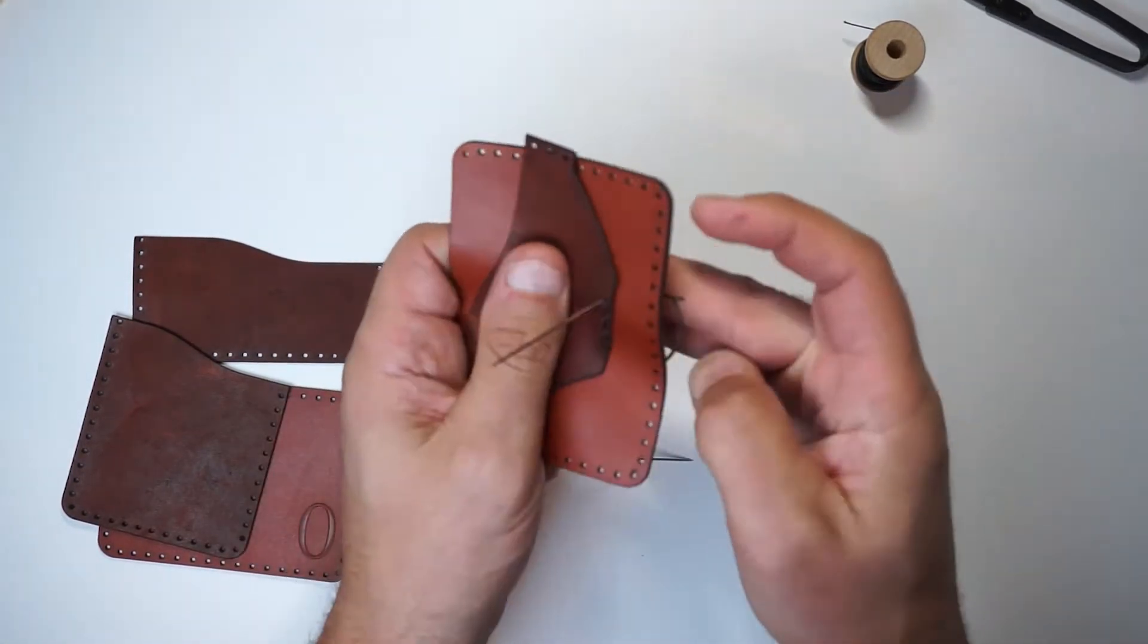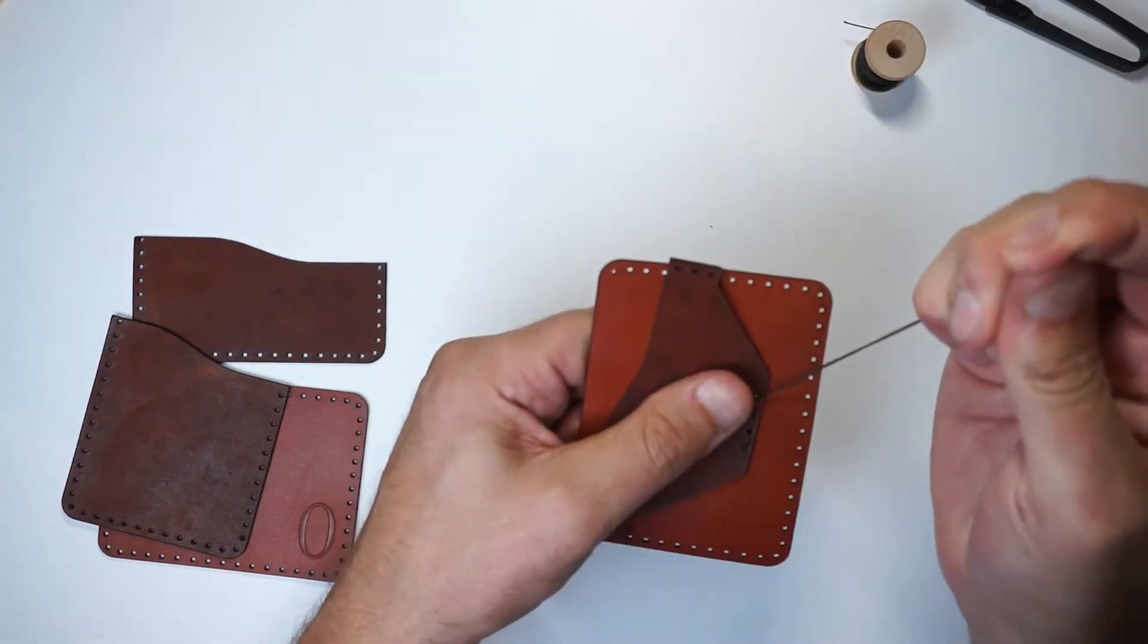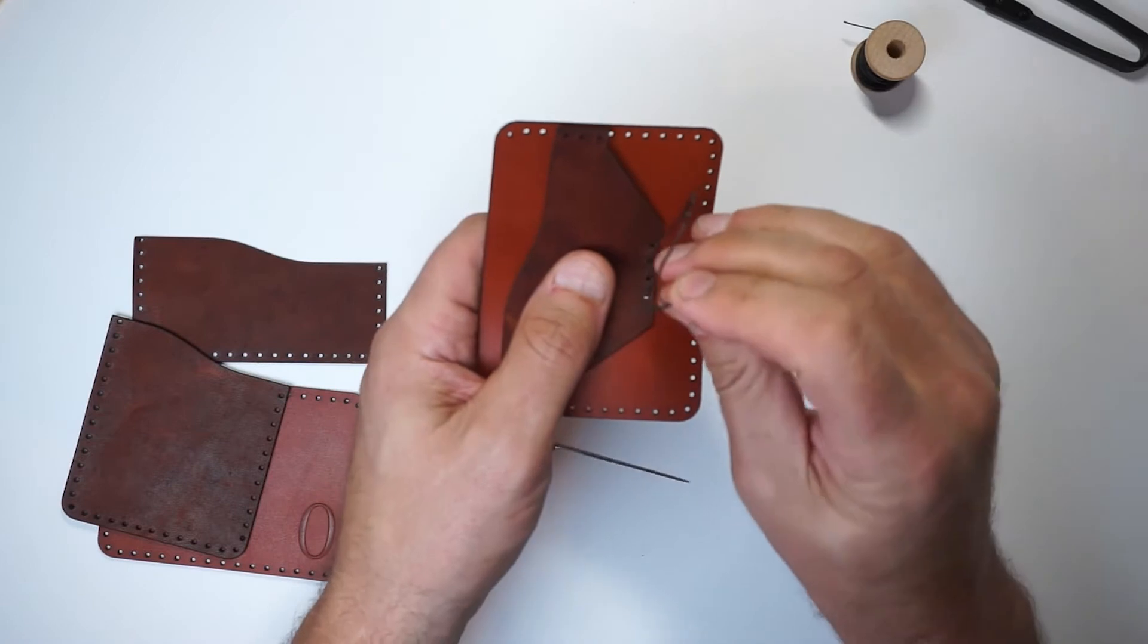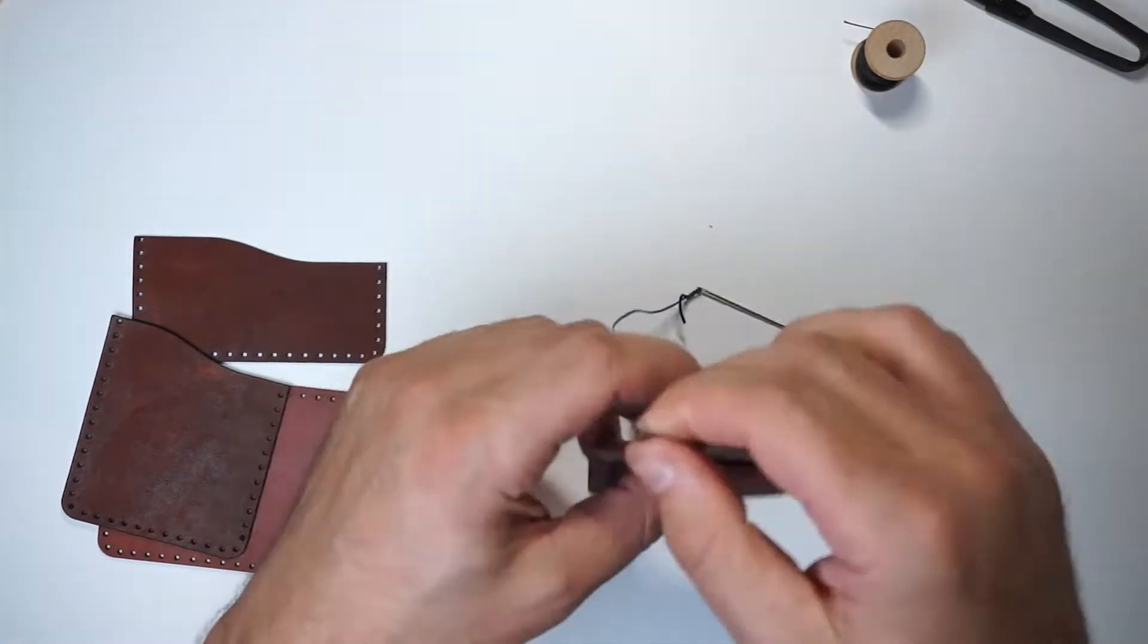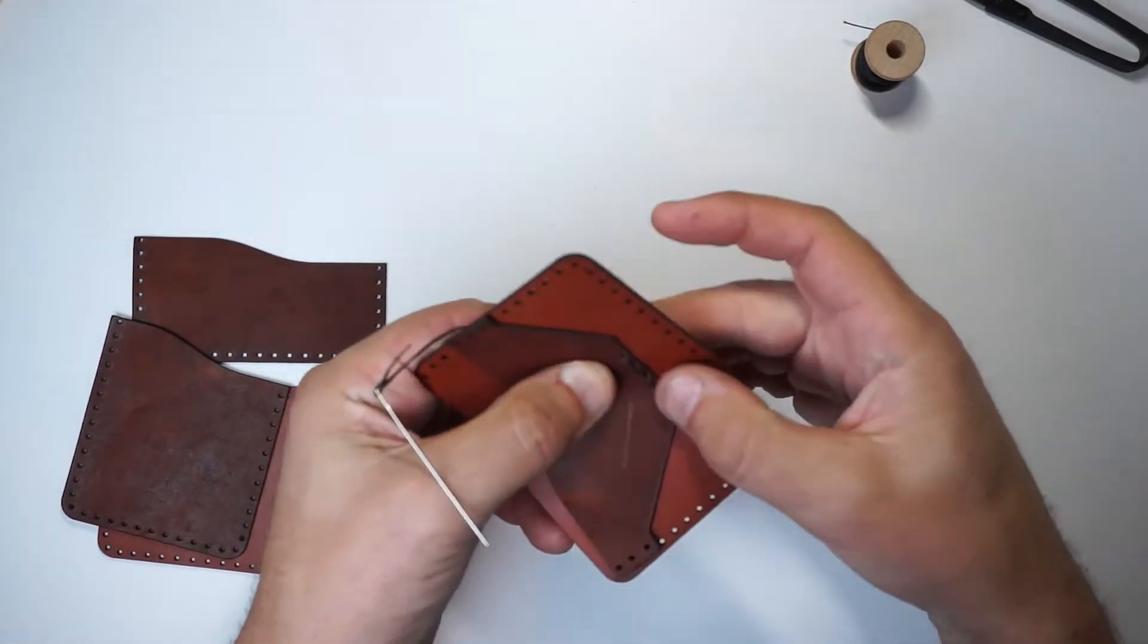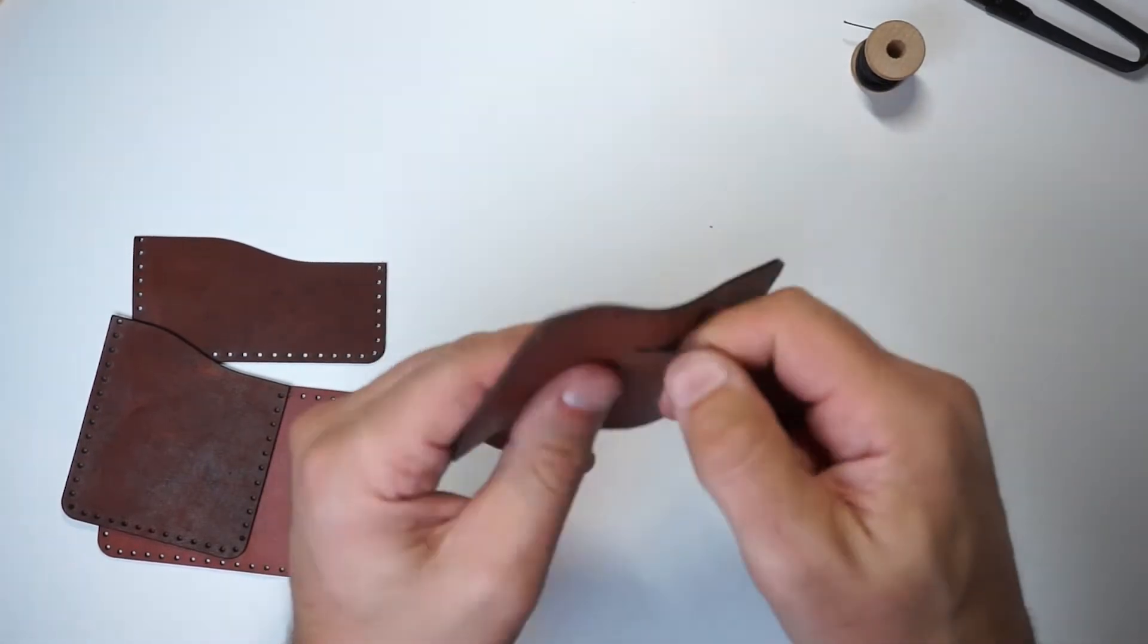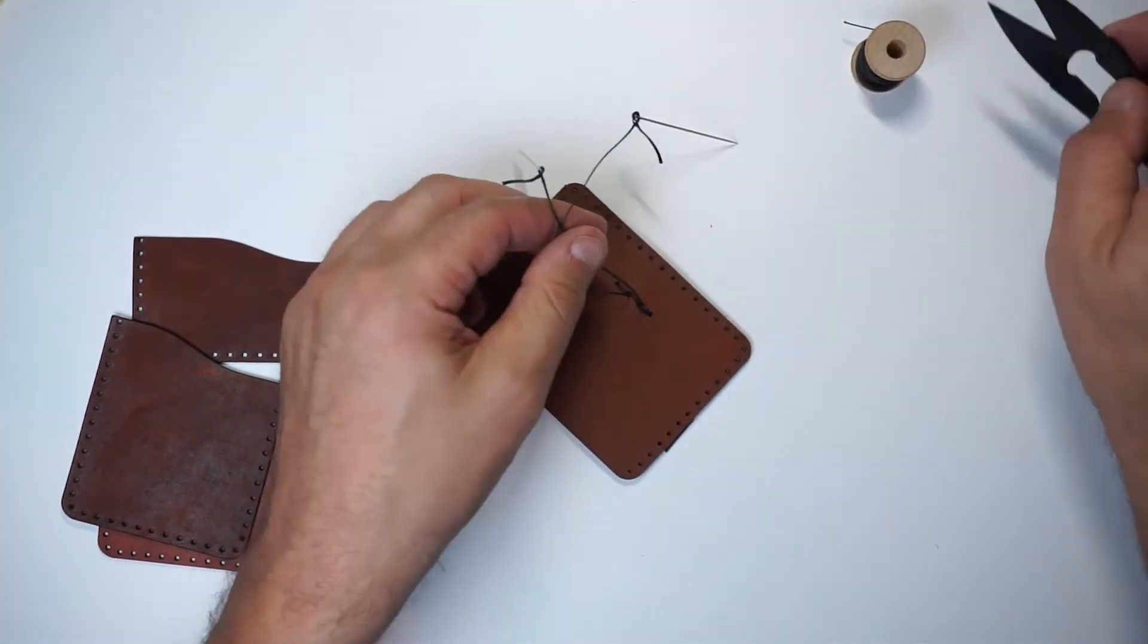Now that we're at the end of the stitch line, let's make sure the stitches are nice and tight, and we'll backstitch. Take both to the back side, and now we'll trim these off.